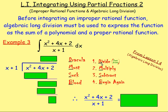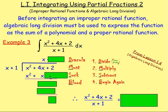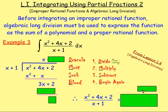From there, Dracula — divide. So divide the first term: x squared divided by x gives you x. Write that above. Must — multiply: x times x gives x squared, x times 1 gives 1x. Keep everything in line. After writing your two lines, you suck — subtract. x squared take away x squared: those terms should always cancel out. If they don't, you have made a mistake. So 4x take away x gives 3x, and 2 take away 0 gives 2.